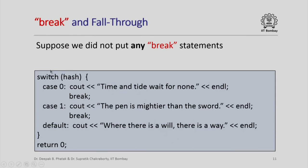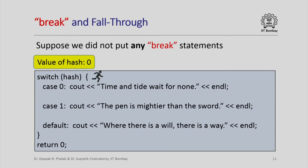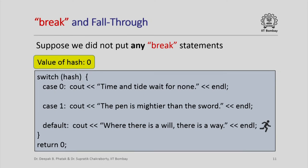What would happen if we did not put any break statements? If we remove the breaks and the value of hash is 0, the computer executes the statement for case 0 and prints the first message. Then, in the absence of a break statement, it falls through to the next executable statement — even if that corresponds to a different case — and continues executing all subsequent statements, ultimately printing all three messages before executing return 0.